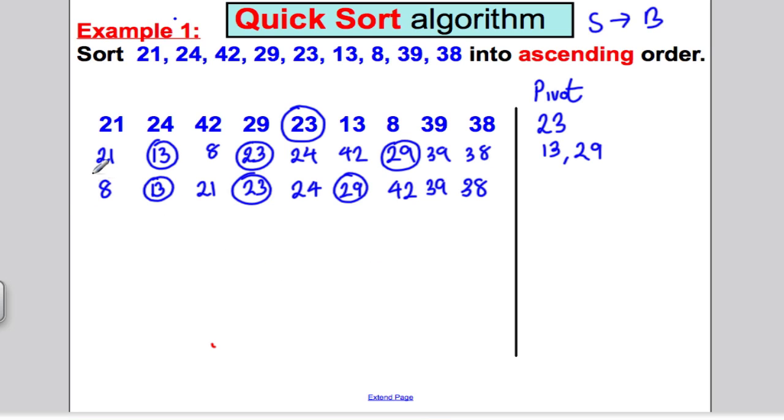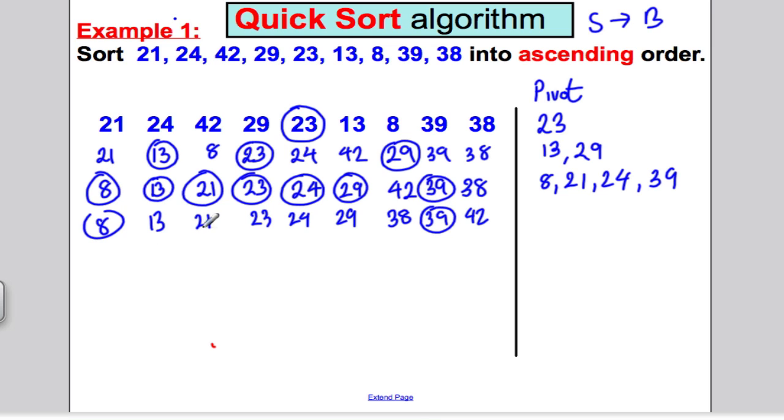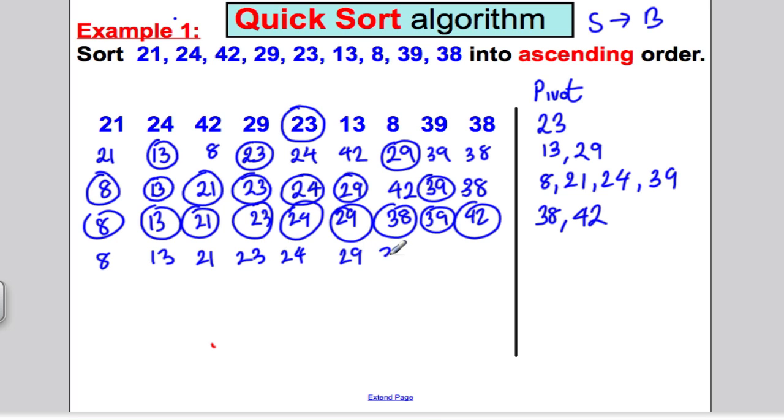Now I'm going to decide on new pivots. Here, that's going to be pivoted because it's a sole number. That's going to be pivoted because it's a sole number. That's going to be pivoted because it's on its own. And out of the last three, the middle is going to be pivoted, 39. Now I'm going to write down my numbers again. 8, 13, 21, 23, 24, 29. I'm going to write down anything smaller than 39, which is 38. Then I'm going to write my 39 down, and my 42. That was pivoted, and all of these have been pivoted. And lastly, I'm going to pivot on these two now, the 38 and the 42. And now I've got the numbers 8, 13, 21, 23, 24, 29, 38, 39, and 42. And they are in the order ascending as required.